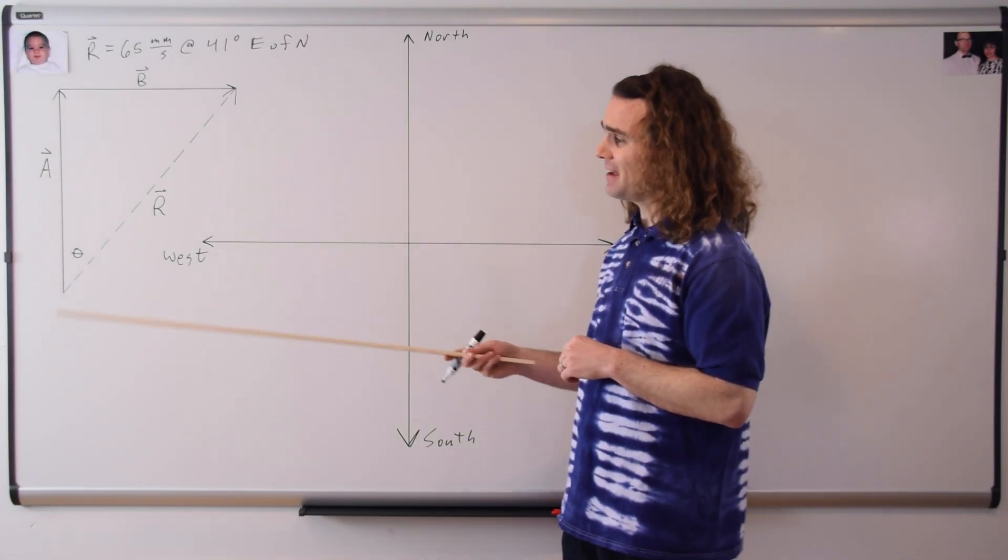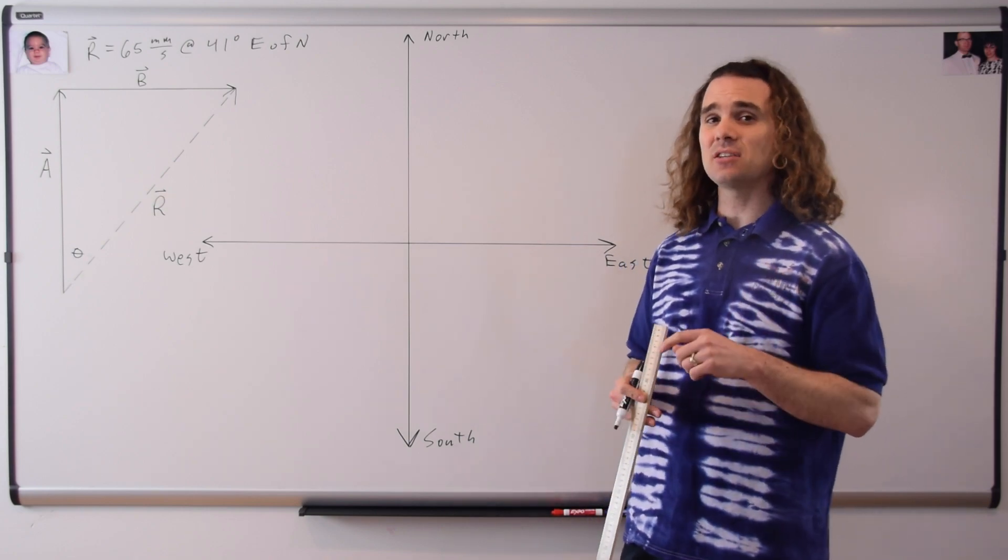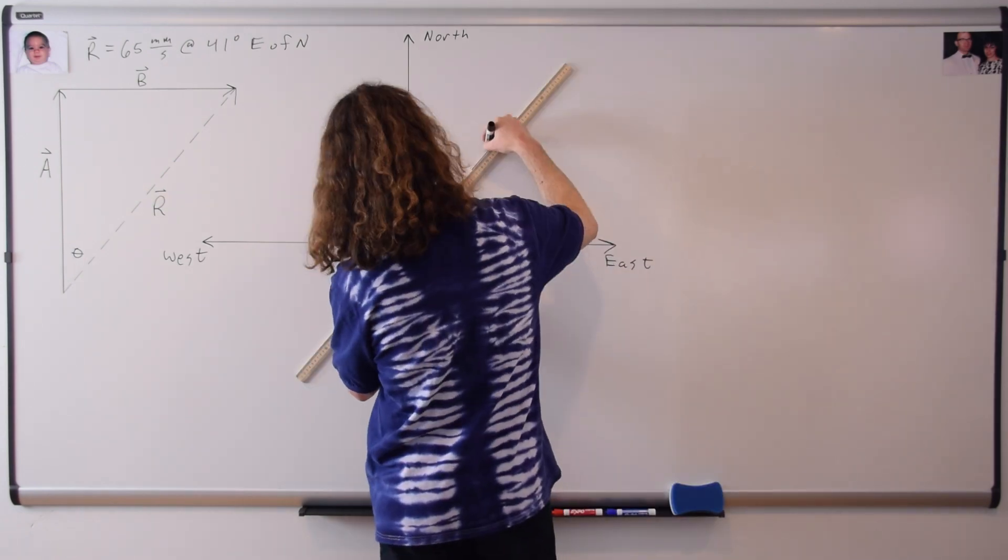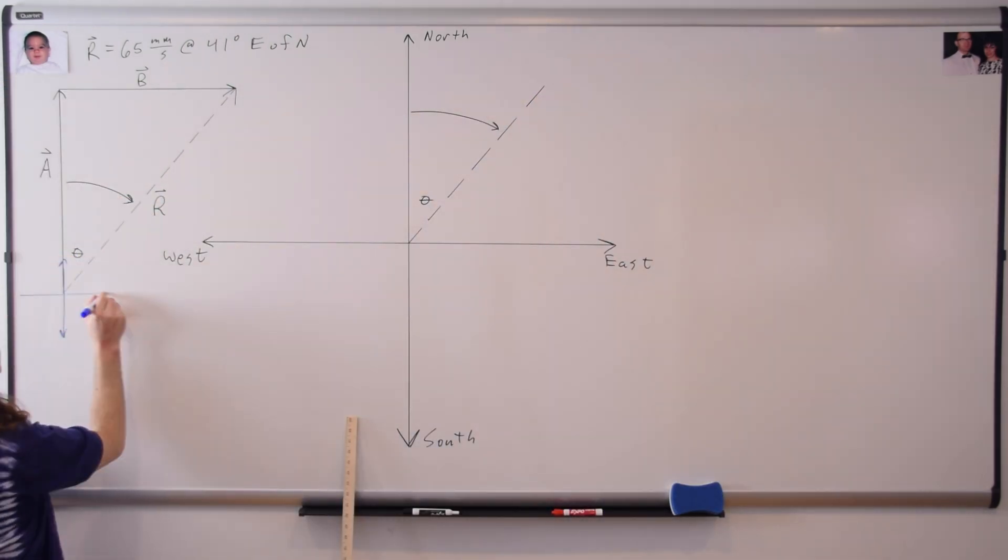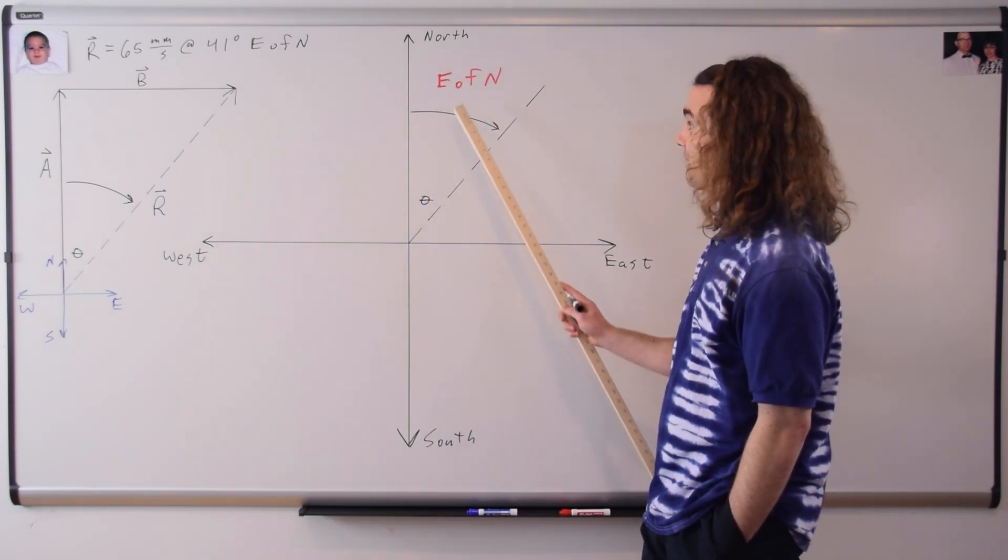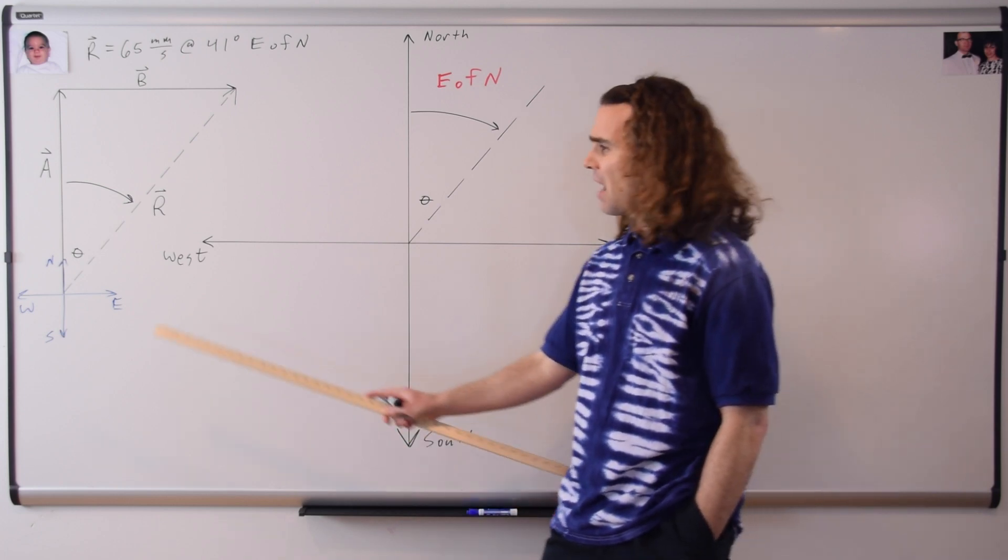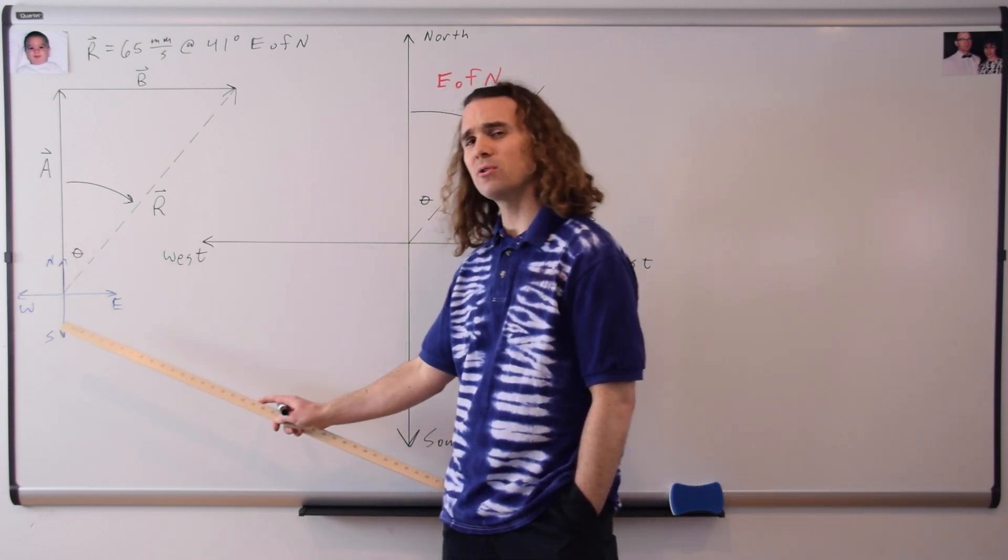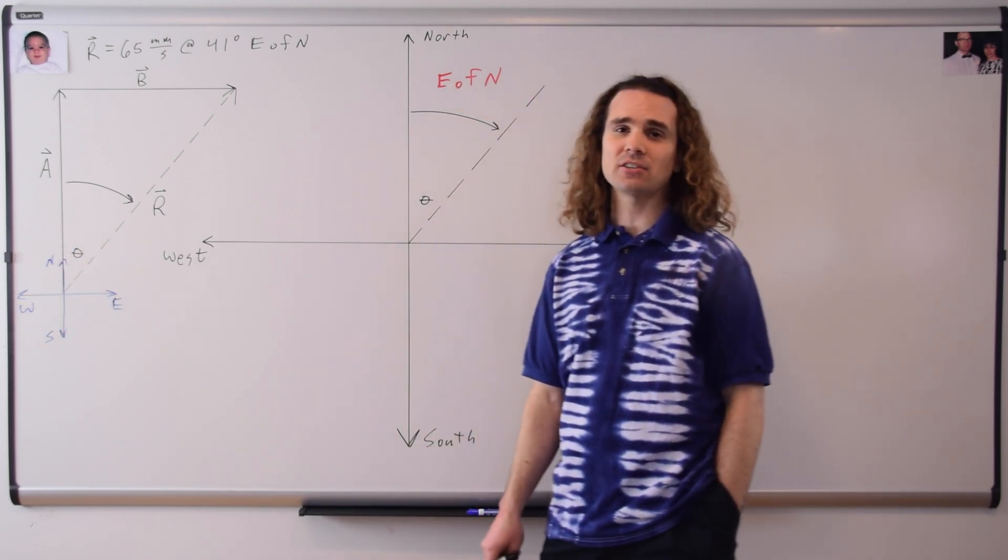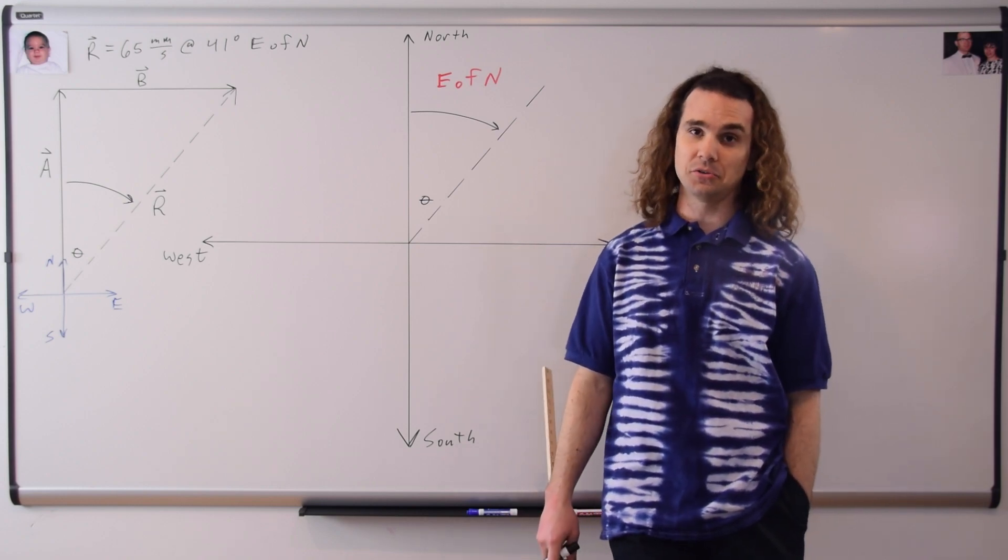Now, let's talk about how I identified this angle here, theta, of 41 degrees, to be east of north. So this angle right here is angle theta east of north. Same theta, and also east of north. I've also drawn a small compass rose on the tail of our result vector r, which is something that I do suggest that you do if you are struggling with cardinal directions.